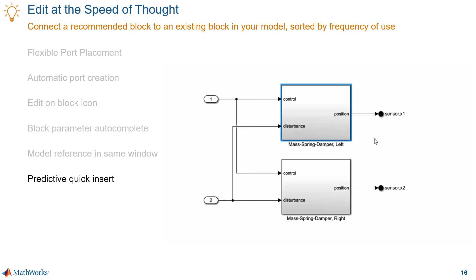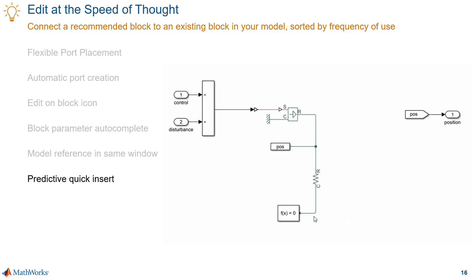We're speeding up model creation by helping you avoid those cases when you're not sure what the next connection should be in your model. With predictive quick insert we only show you the blocks that can be connected to an existing port. In other words we do the filtering for you.